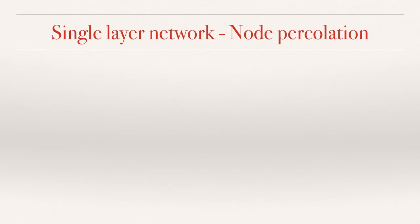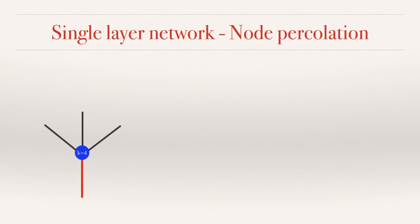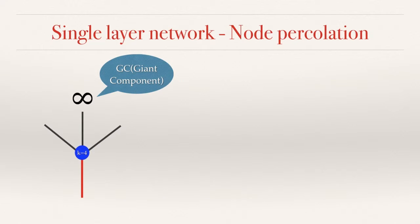Let's start with the single-layer network node percolation. Imagine a network — it randomly picks a link, which is labeled in red, and it leads us to a node with degree 4, meaning it has three other links. And maybe one of them leads to the giant cluster, which has infinite size. In this case, you can label the probability of finding a link that leads to a giant cluster as x.